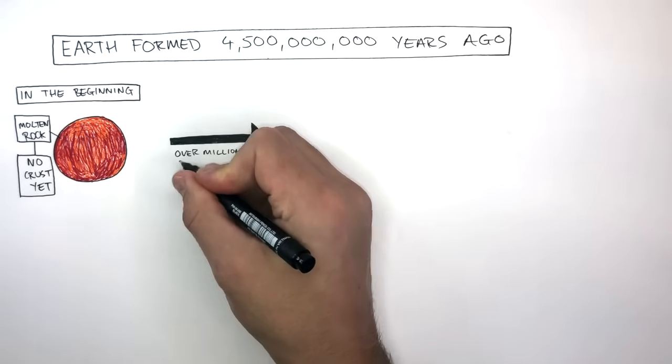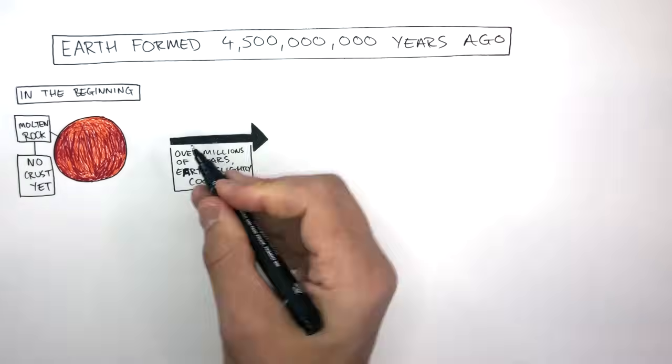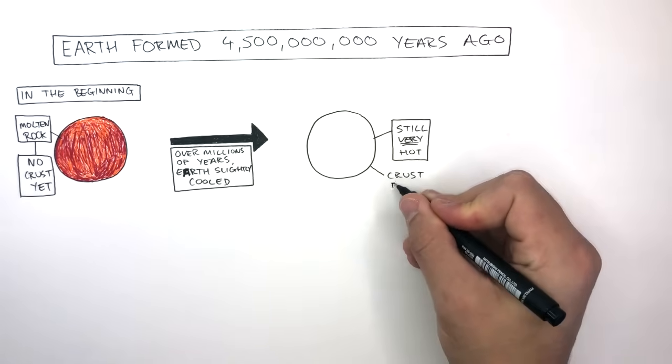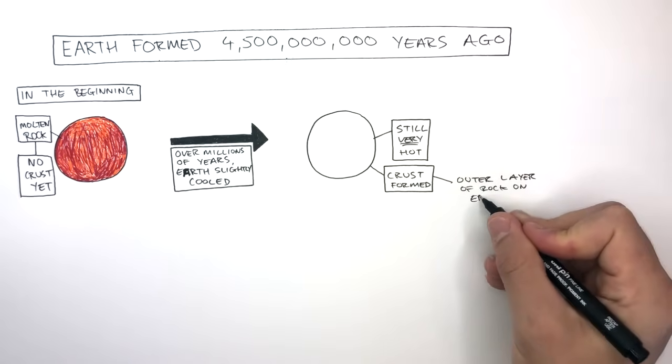Over millions of years, Earth slightly cooled. However, it was still very hot. Crust formed, which is an outer layer of rock on Earth.